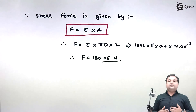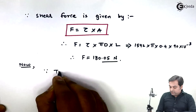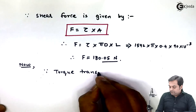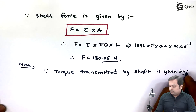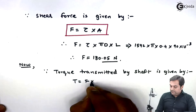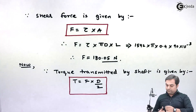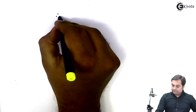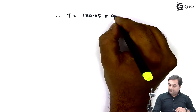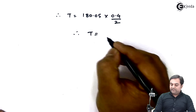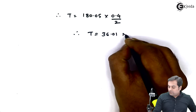After getting shear force I can calculate torque. Torque transmitted by the shaft equals shear force multiplied by the radius of the shaft, that is diameter divided by 2. So T equals 180.05 into 0.4 divided by 2. The torque comes out to be 36.01 Newton meter.